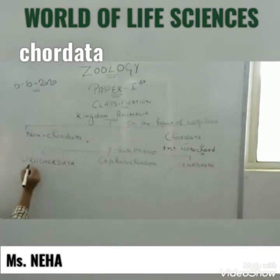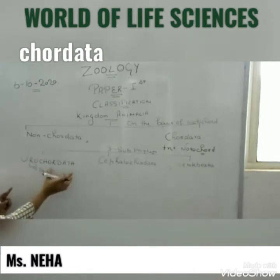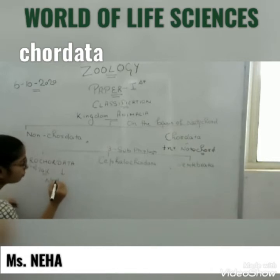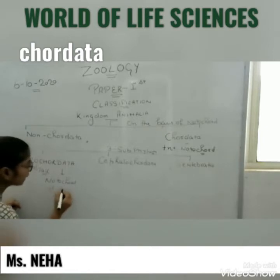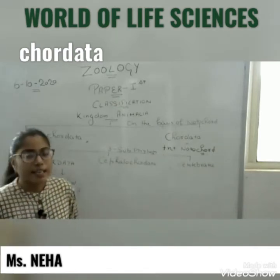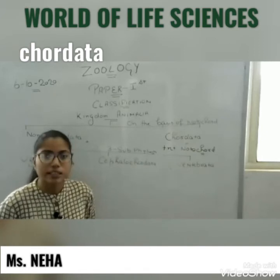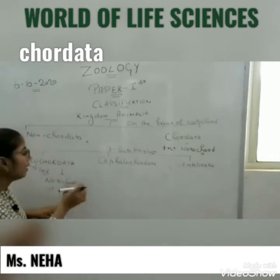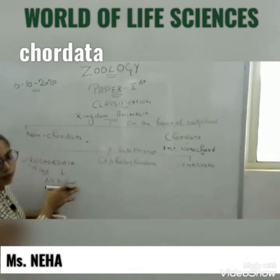Urochordata — 'Uro' means tail. Under Urochordata, the notochord is present in the tail region. But mainly, it is found in the larva's tail. When the larva undergoes retrogressive metamorphosis and converts to adult, there is no tail in the adult, and therefore no notochord.